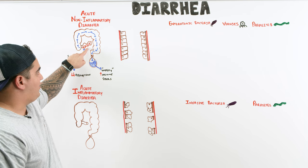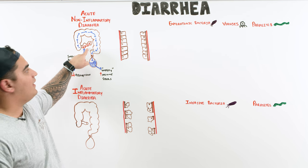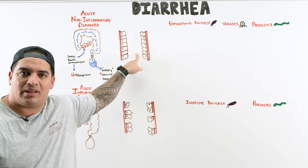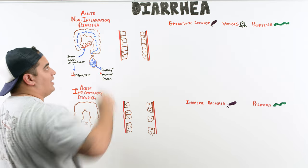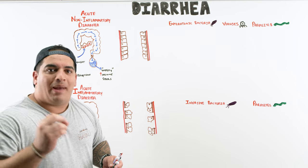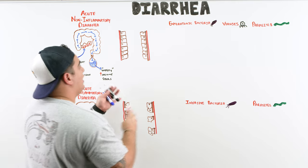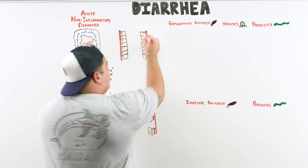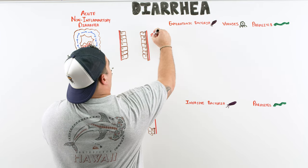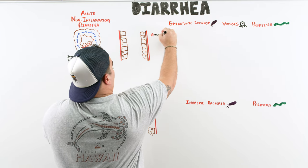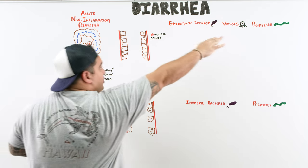At the microscopic level, one important feature of acute non-inflammatory diarrhea is that the actual pathogens causing it do not directly damage the mucosa. There is no direct mucosal damage. Instead, these pathogens work through a different mechanism.